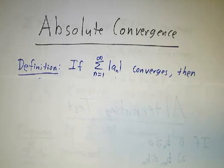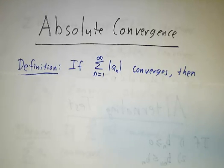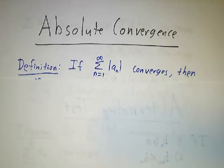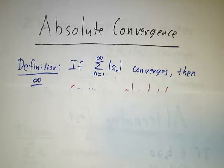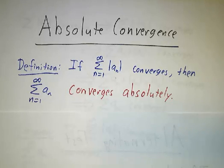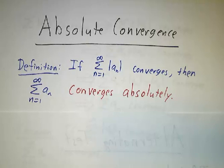The absolute values of the terms, by definition, they're all positive. And if the sum of the absolute values converges, then we say that the original series converges absolutely. Absolutely in this case doesn't mean positively sure 100% — it means absolute value.